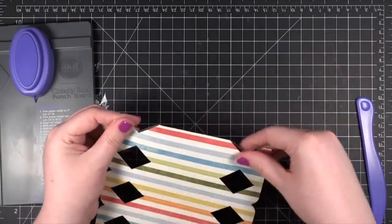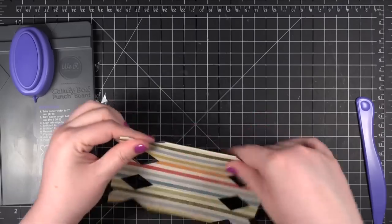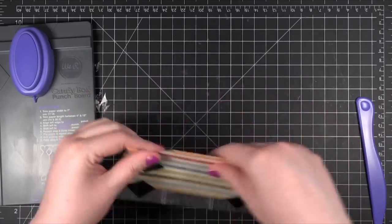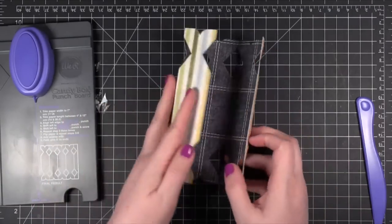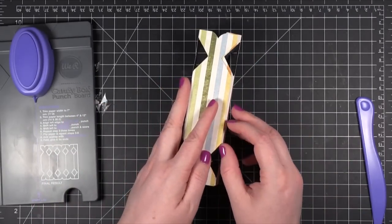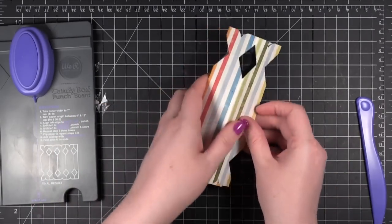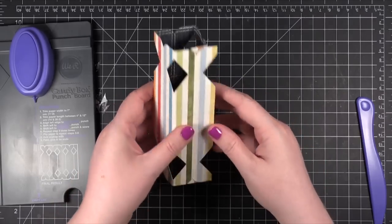So first you're going to take the scoring lines and you're going to start folding in along all those lines that we created. And this eventually is going to come over here so that it creates a box just like this.